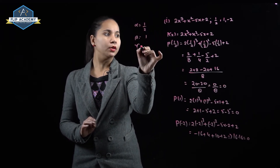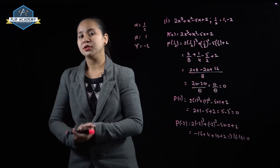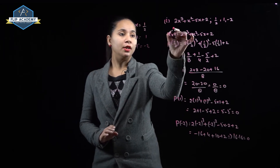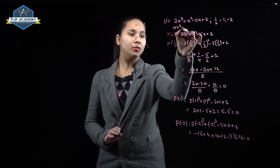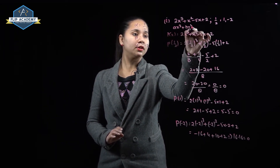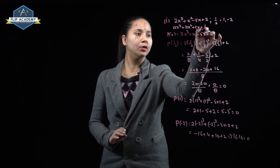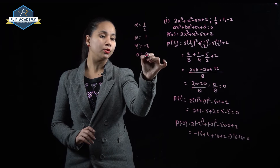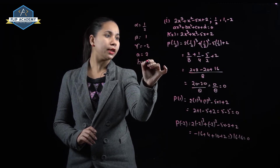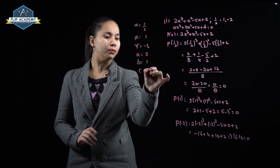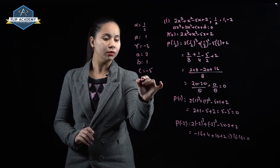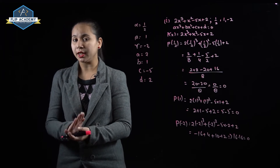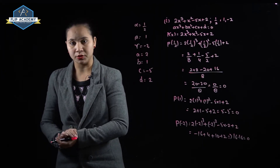So α = 1/2, β = 1, and γ = -2 are the zeros of this polynomial. Now compare the given polynomial with the general equation ax³ + bx² + cx + d = 0, giving a = 2, b = 1, c = -5, and d = 2.